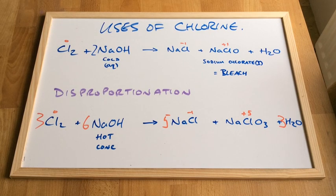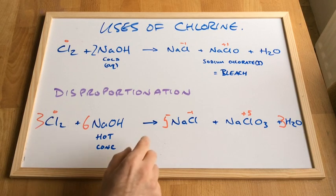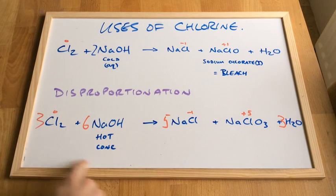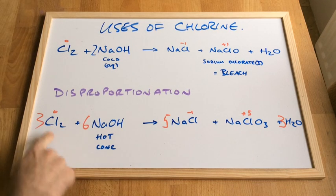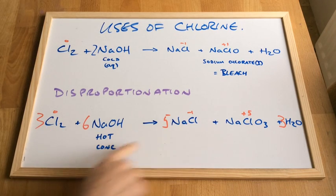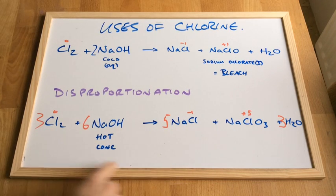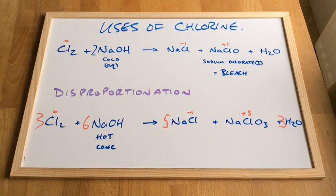Let's double check why it's disproportionation: chlorine has been oxidised — the oxidation number increased — and also reduced. So the same atom is oxidised and reduced, which is disproportionation.